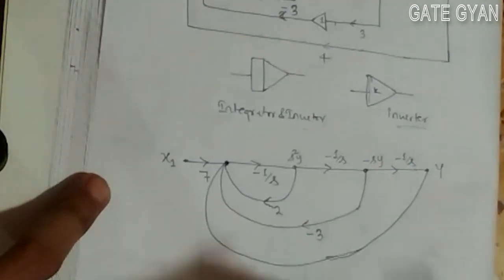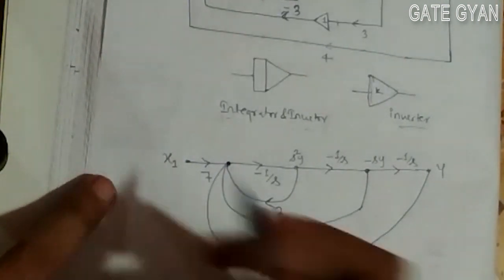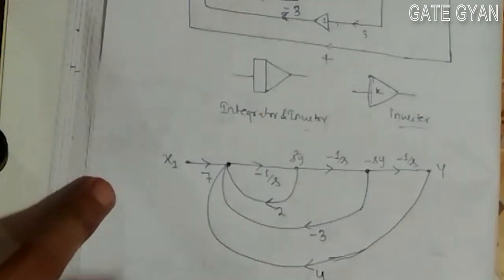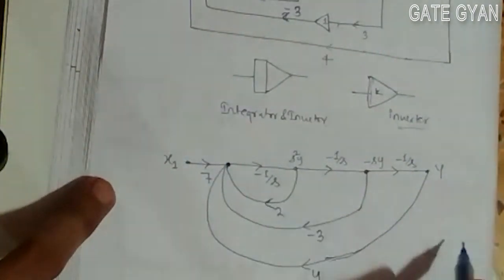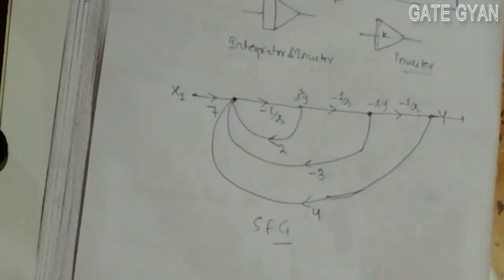From the last point, my gain which is going to be multiplied is 4. So this is my signal flow diagram of the given question.